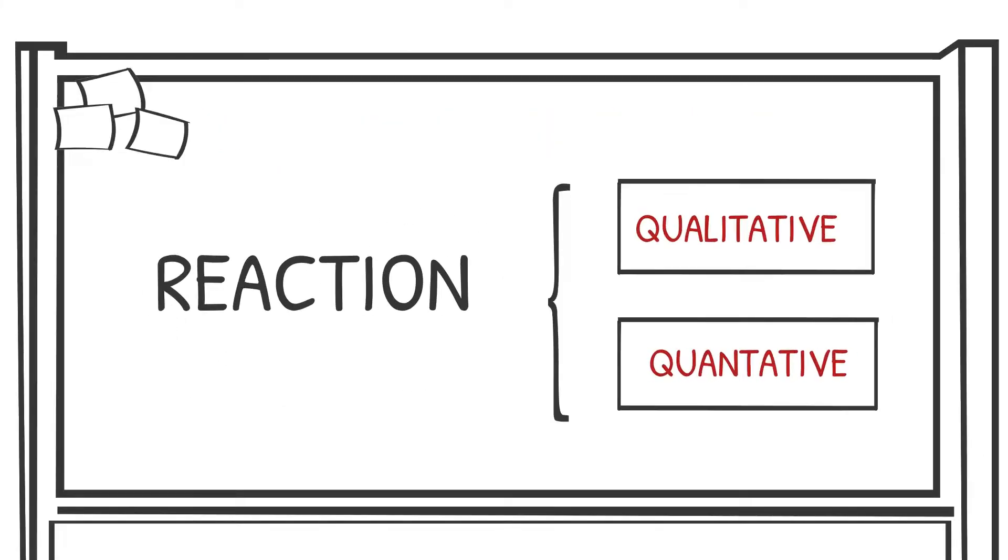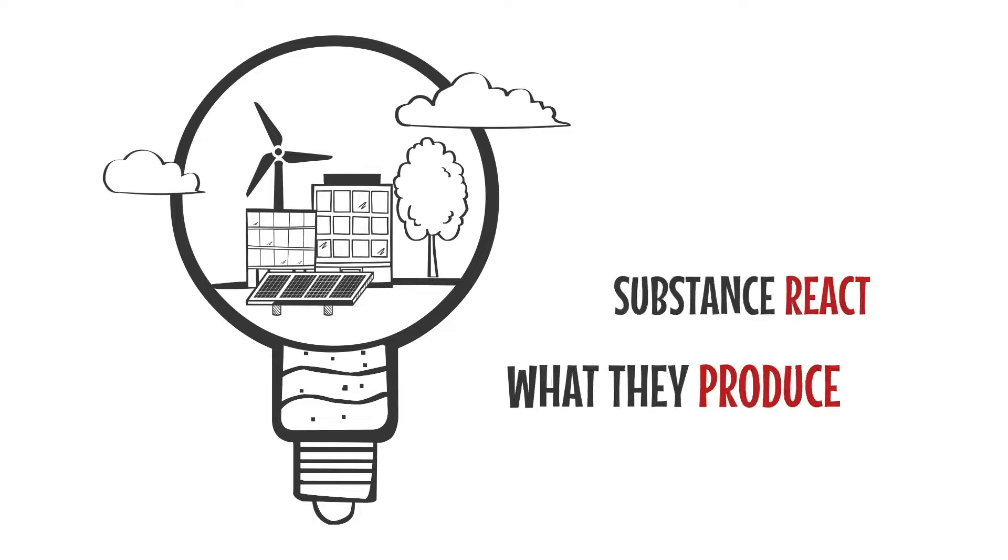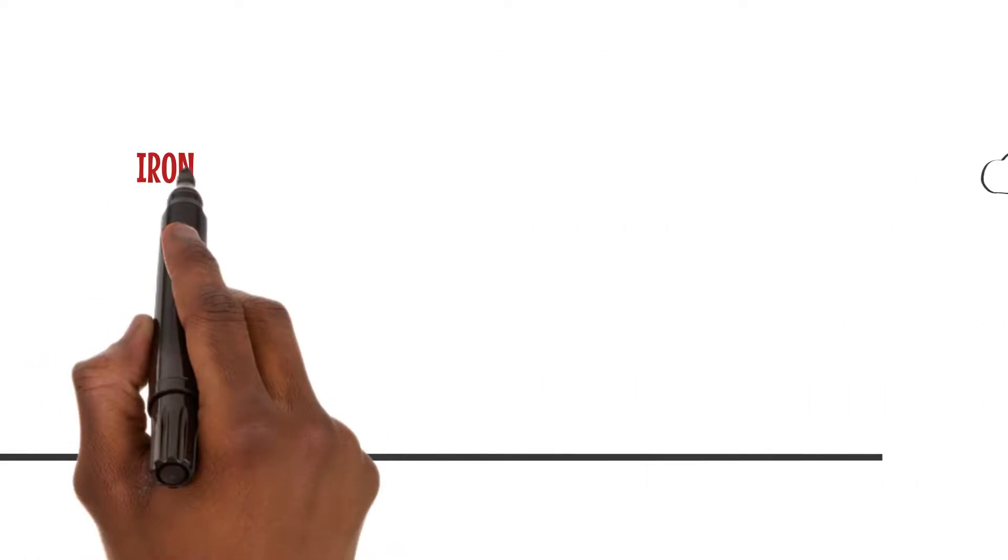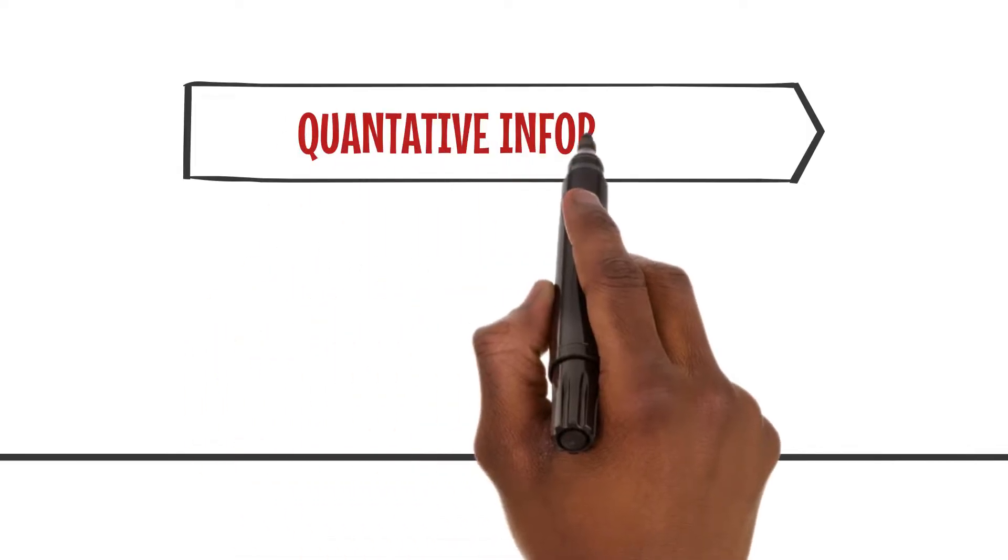Qualitatively, chemical equations tell us which substances react and what they produce. For example, when iron reacts with oxygen, it forms iron oxide. But quantitative information is where things get really interesting.